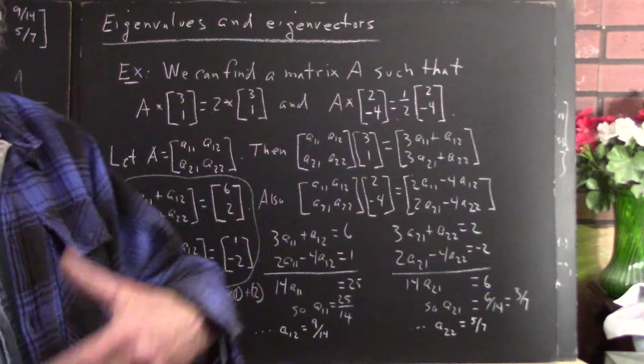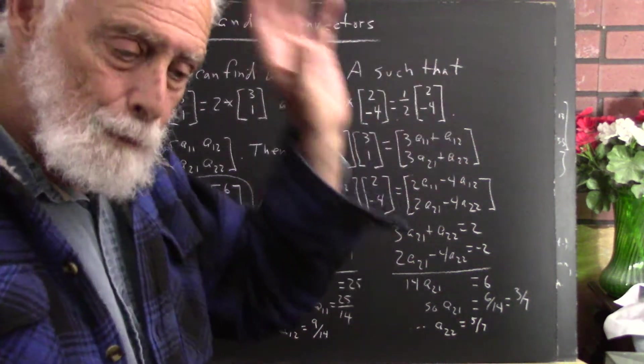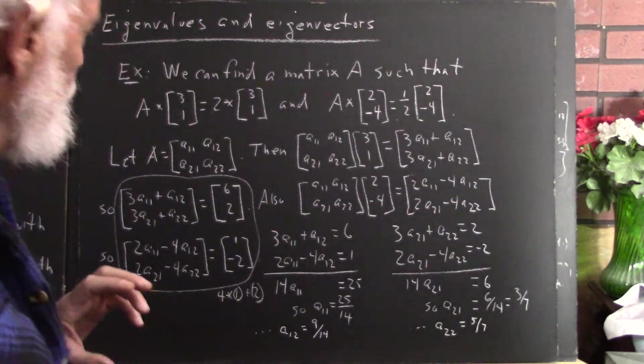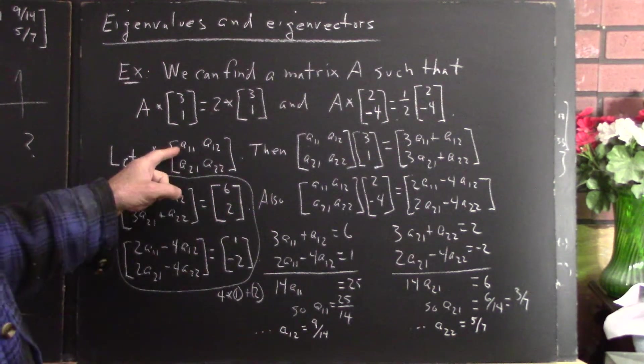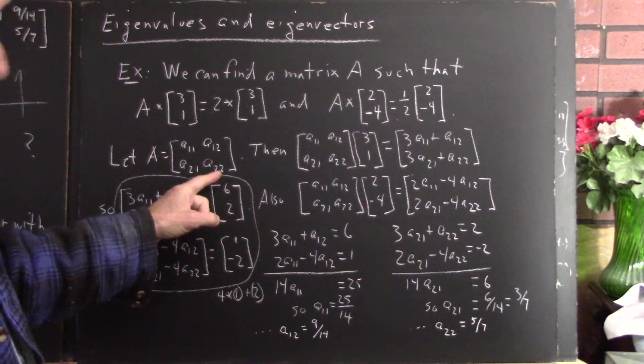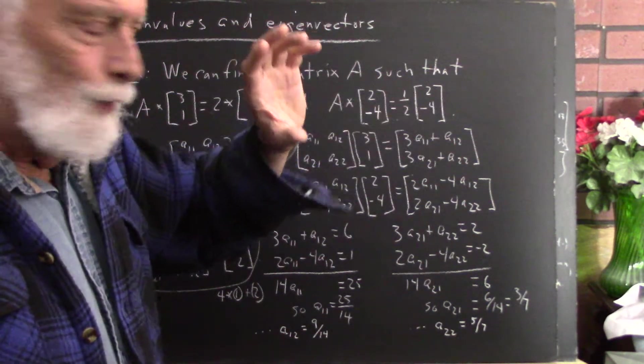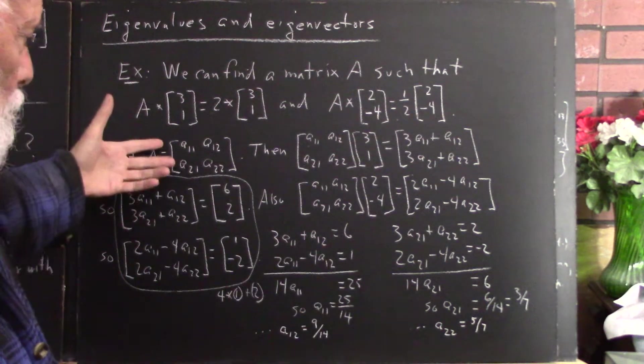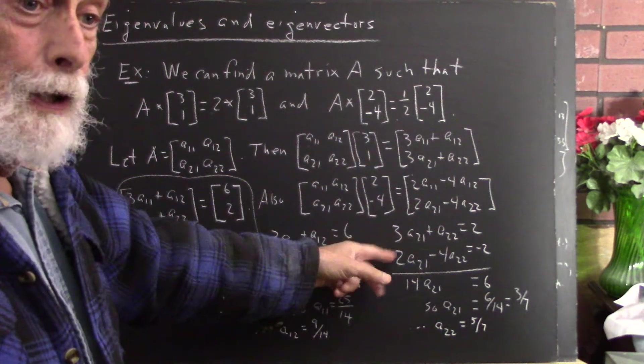Notice if we wanted to also pick a third vector, pick some other vector and pick some multiple, it wouldn't work. The reason it wouldn't work is we've only got four unknowns in our equation. There are only four numbers we have to work with here. If we had a third vector that we wanted also to map to some multiple of itself, we don't have enough variables. We've already got four equations and four unknowns.